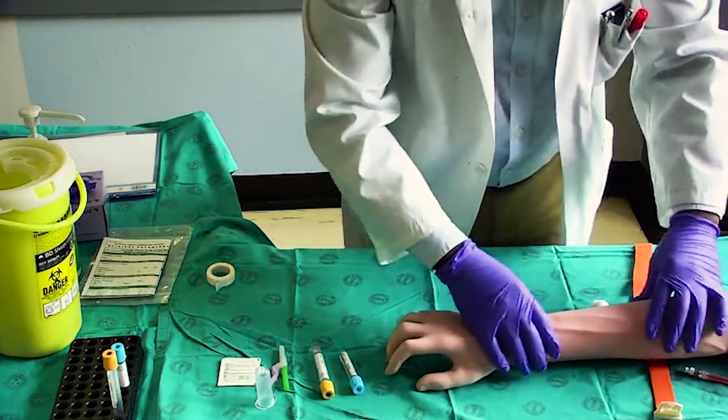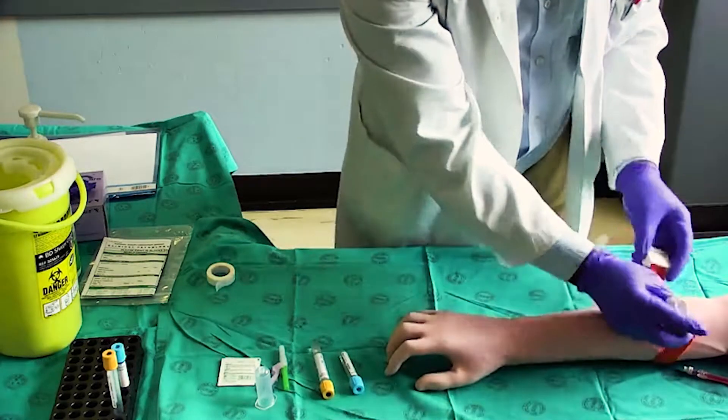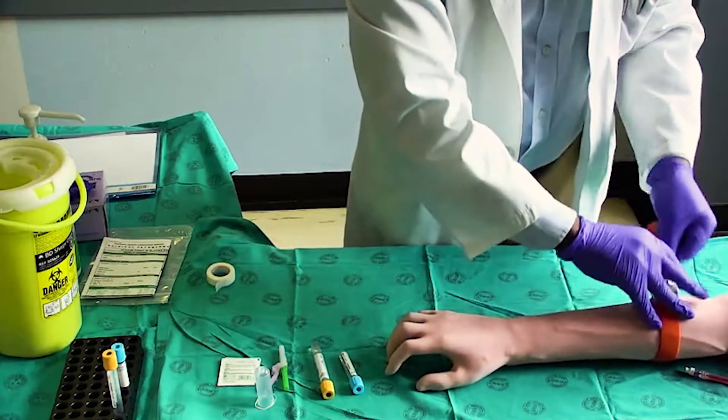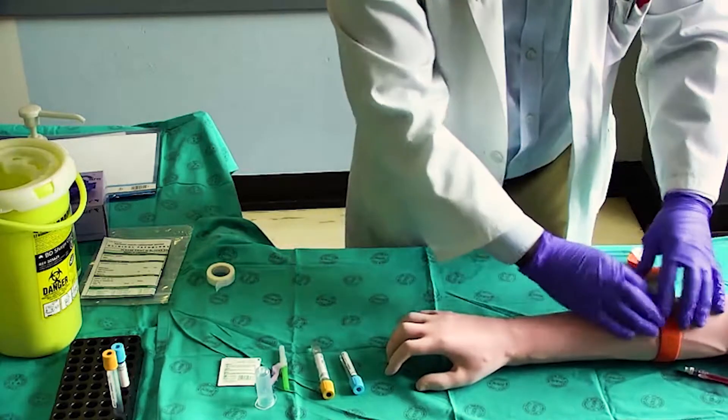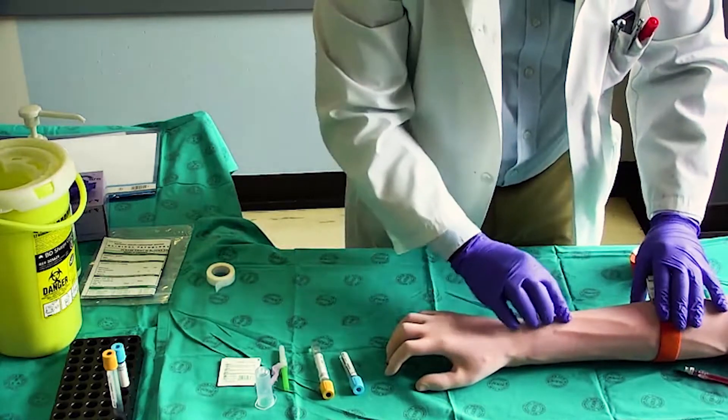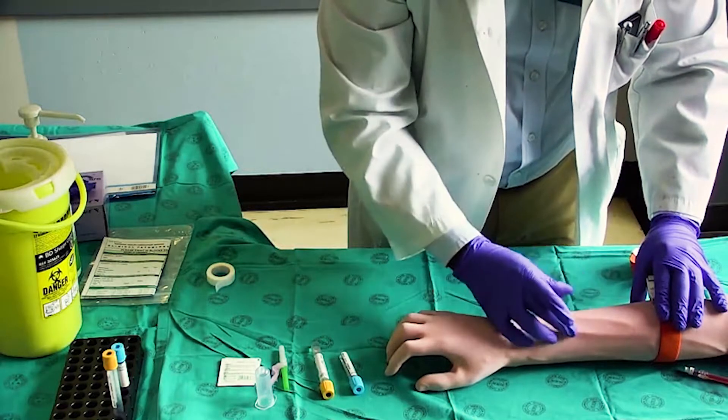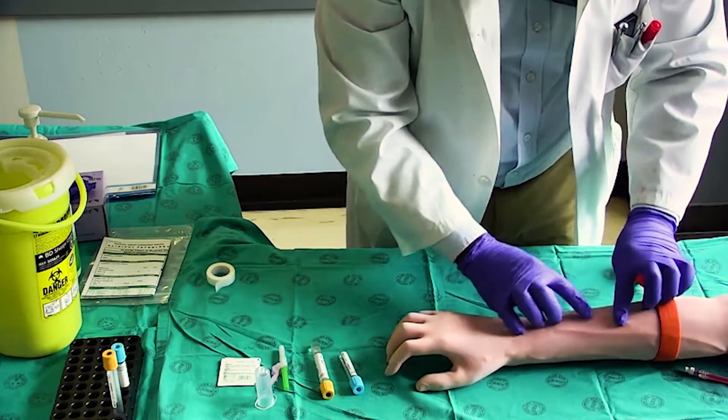Extend the patient's arm and inspect the antecubital fossa or forearm for suitable veins and for scars, wounds, and or infections. Apply the tourniquet four to five finger widths above the antecubital fossa. Locate and palpate a suitable vein.